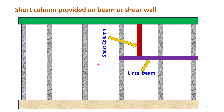A short column effect can also occur due to the provision of a short column over a beam. For example, a column placed over a lintel for some purpose is certainly shorter than the neighboring columns and will be subjected to the short column effect.